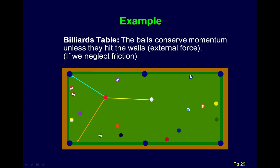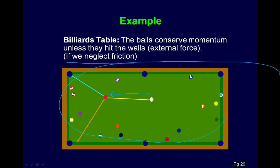A really nice example is billiard balls. If you have two billiard balls collide and we neglect the friction of the table — which is a pretty good approximation — what happens is the balls are just going to transfer momentum between each other. But the total system of all the balls is going to have the same amount of momentum; it's just going to be transferred between the balls.